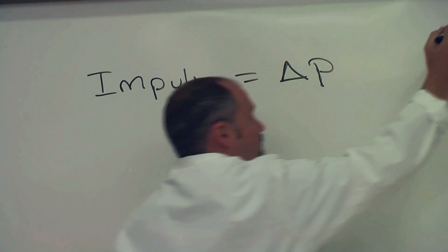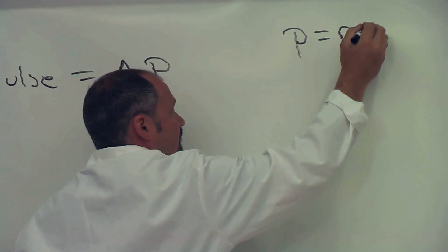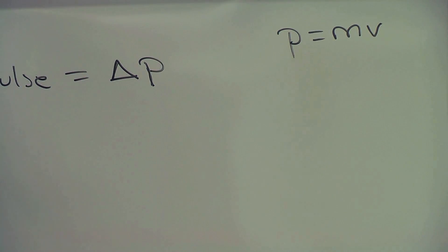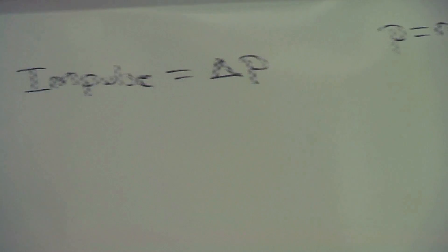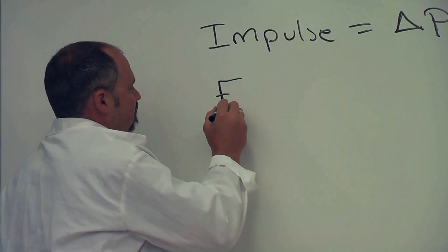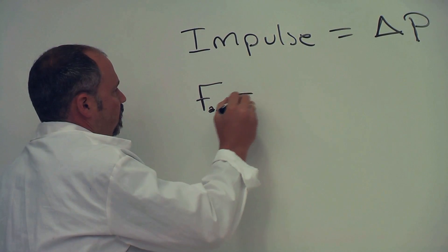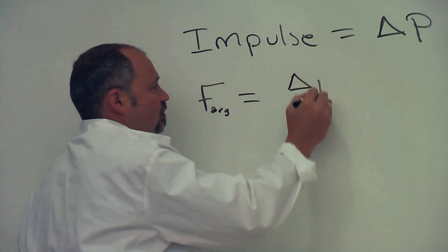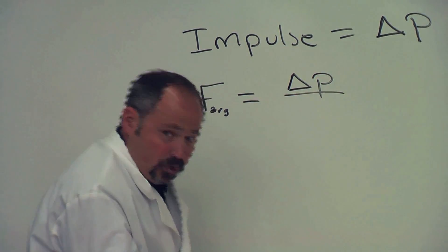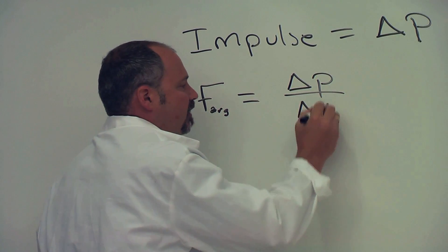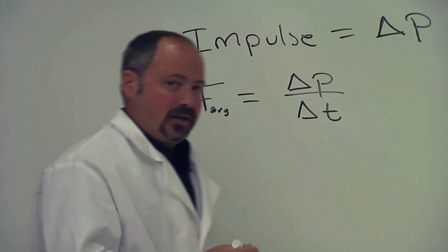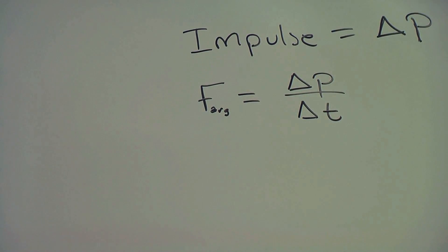And don't forget that momentum is defined as the mass times the velocity. And we know that the average force exerted on an object is the change in momentum or the impulse divided by the amount of time it's in contact with the surface.